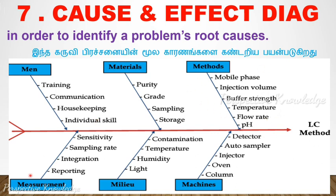For Measurement: sensitivity, sampling, sampling rate, integration, and reporting are the measurement-related issues. For Machine: detector, auto sampler, injector, oven, and column are the machine-related factors.